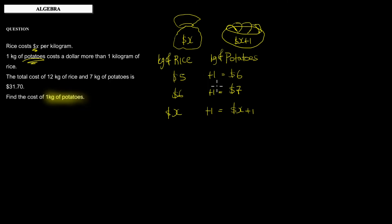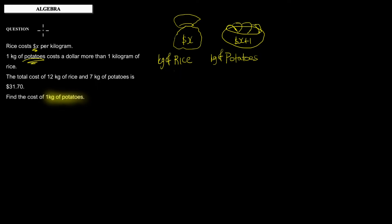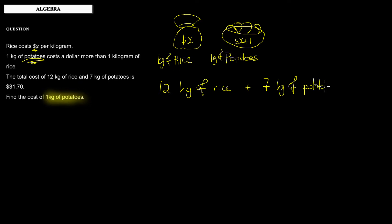What else do we know? We also know that the total cost of 12 kilograms of rice and seven kilograms of potatoes is 31 dollars and 70 cents. So whatever each kilogram costs, all together it is $31.70. We can write this out: 12 kilograms of rice and seven kilograms of potatoes is going to be equal to $31.70. This is an important piece of information.